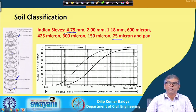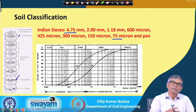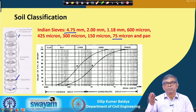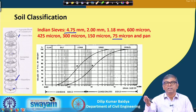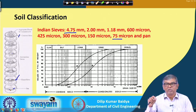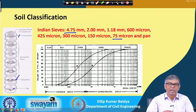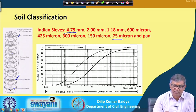You have to carefully conduct the test so that if you have 500 grams, the cumulative weight collected from each sieve should be very close to 500 grams. From that data, you prepare columns for weight retained, percent retained, cumulative percent retained, and then the last column is percent finer. If cumulative retained at 2 mm is 20 percent, that means 80 percent of the soil is finer than 2 mm.